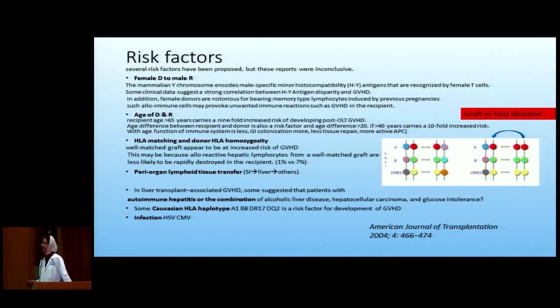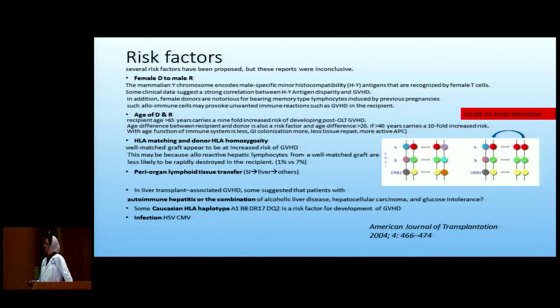Other risk factors include periorganic lymphoid tissue, as discussed. Additional factors mentioned in case reports include autoimmune hepatitis, combination with alcoholic liver disease, hepatocellular carcinoma, and glucose intolerance — all suggesting the patient is more immunosuppressed. The Caucasian HLA haplotype A1, B8, DR17 is also a risk factor for GVHD. Infections like HSV and CMV may also be related to triggering or perpetuating the process.